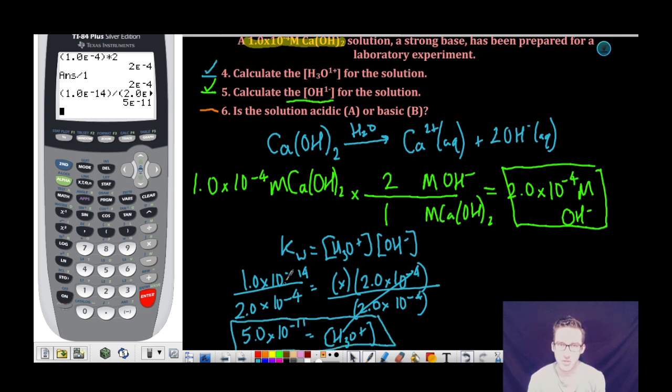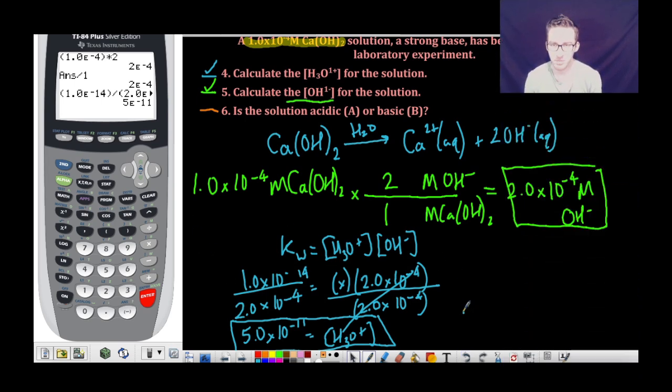Now, a quick note as you should try and do this in your head. When you divide 1 by 2, you get 0.5 times 10 and then you subtract your exponents. So, negative 14 minus a negative 4 is going to give me negative 10. And then, simply remember that in order to have correct scientific notation, you have to move your decimal point. So, we end up with 5 times 10 to the negative 11.